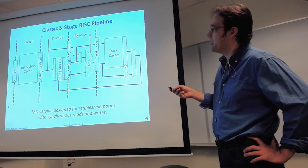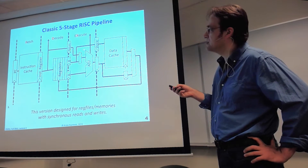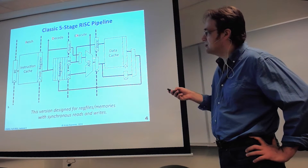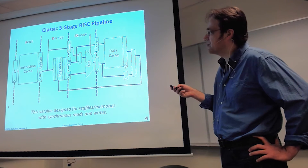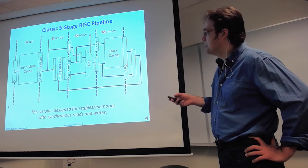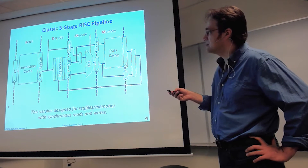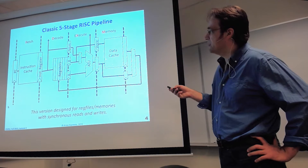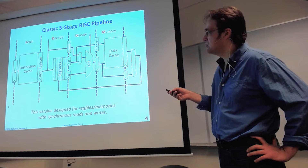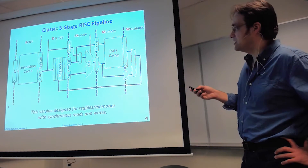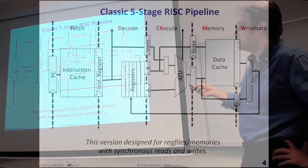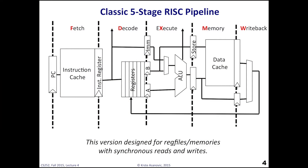The condition coming out of the ALU determines which way a branch is going to go. The result of the ALU gets captured in another pipeline register, along with the store data value from the register file if it's a store instruction. Then the memory phase takes the address and possibly store data and does a read or write to the data cache. If not doing a memory instruction, the result passes down to the final stage — writeback — which takes either the ALU result or the value loaded from the data cache and muxes one into the write port of the register file. This is the classic five-stage RISC pipeline.